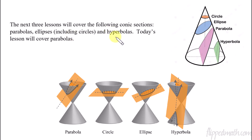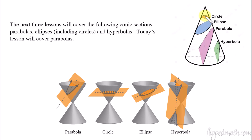Today we're going to focus just on parabolas, but I wanted to show you real quick the visual of why do we call these things conic sections. If you take a cone and you splice it in different ways, the shape that it creates is what we call conic sections. It would create either a circle, an ellipse, a parabola, or a hyperbola.